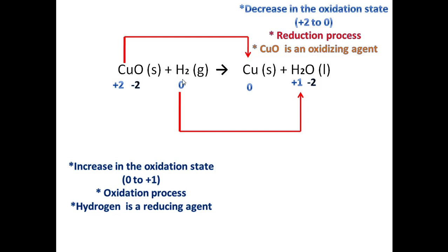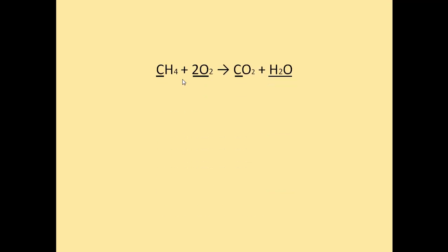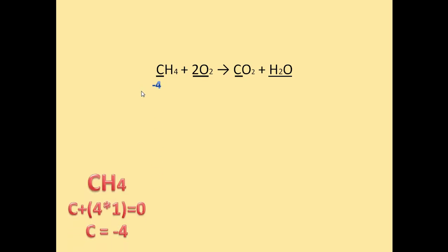Let's take another example to enhance our understanding. Here we have a redox reaction — it is also a combustion reaction, which is the reacting of methane gas with oxygen. Let's determine the oxidation state of carbon in methane: it is negative four. We get negative four because hydrogen has an oxidation state of positive one, and we have four hydrogen atoms. Here oxygen has a zero oxidation state because there are no different atoms combined with it.